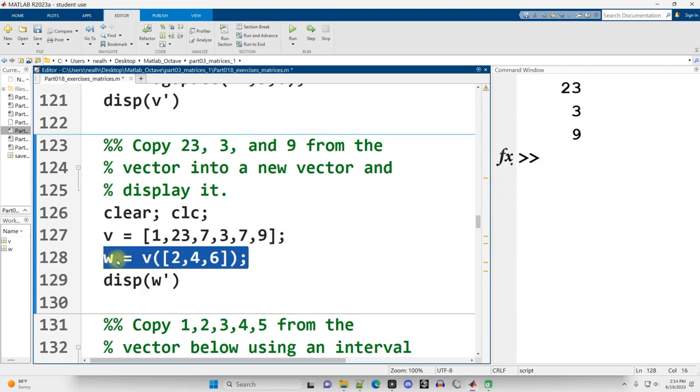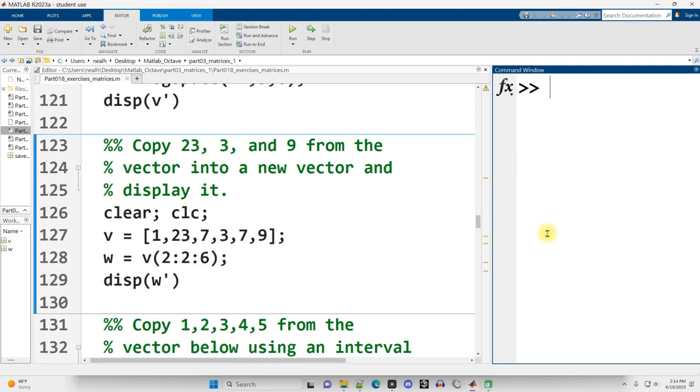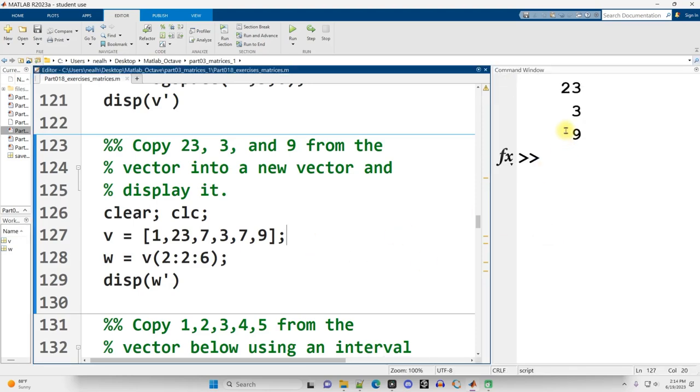Another way is I could say 2, colon, 2, colon, 6. It's pretty much the same amount of typing. So 2, stepping up by 2 until we get to 6. And let me just clear this off. But I will get the same result. And there it is.